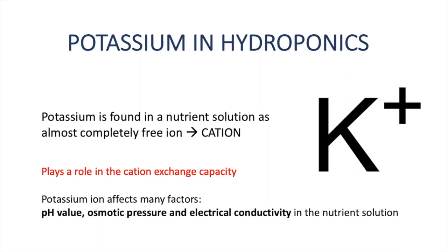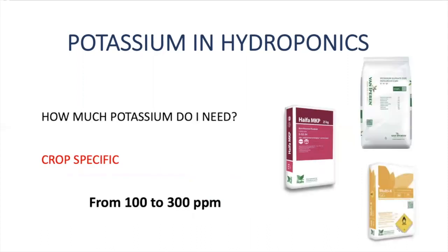The question is: how much potassium do you need? This will always be crop specific, but trying to share an average range, plants need from 100 to 300 ppm of potassium in nutrient solution. Remember this is totally crop specific and also depends on the stage of development. For leafy greens, for example, we can keep the same potassium level for the whole cycle.